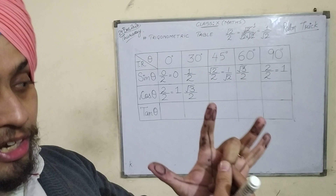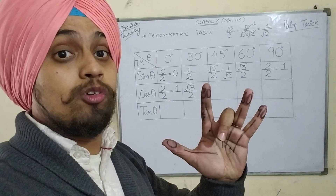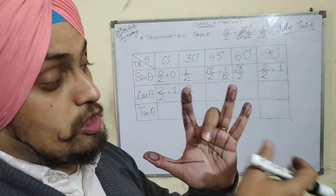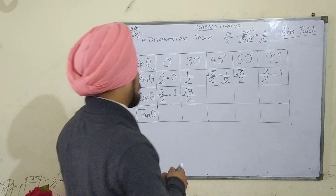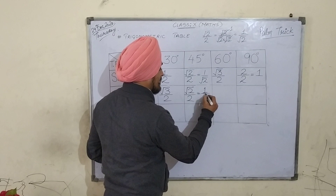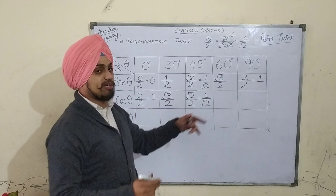Let's calculate the value of cos 45 degree. Remember: for sin theta you have to see the number of fingers on the left of the bent finger, and for cos theta we have to see the number of fingers to the right of the bent finger. There are 2 fingers to the right of it. So square root of 2, divided by 2. As already discussed, √2 by 2 equals 1 by √2. So I can use either value — √2 by 2 or 1 by √2 — for cos 45 degree.